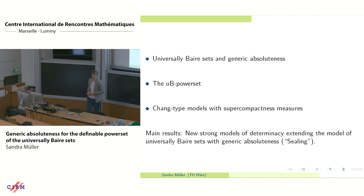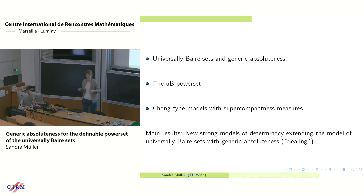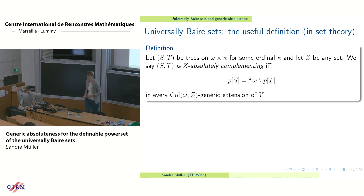I will split the talk into three parts. The first part will be about introducing the concepts: what is the model L(Γ∞, ℝ), briefly what a universally Baire set is, and the notions of generic absoluteness I want to talk about. Then I will introduce the UB power set — that's the first extension we consider. Then I will look at a different type of extensions called Chang-type models with supercompactness measures. The main results will be in both cases: we obtain new strong models of determinacy that also satisfy some form of generic absoluteness known under the term Sealing.